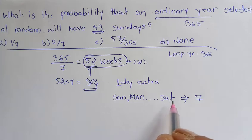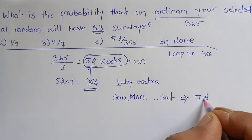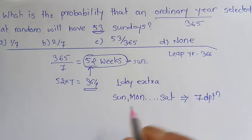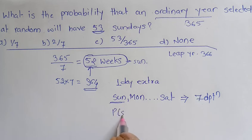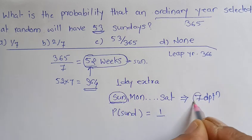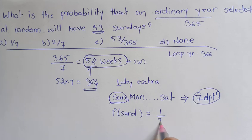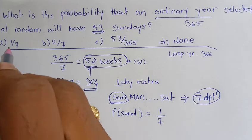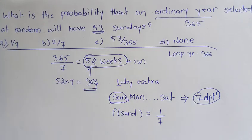So these are, there are total seven options I am having, so out of which I want only Sunday. So what is my probability? The probability of that extra day being a Sunday is what? There is only one option for it, so one. Total options are what? Seven options. So it is 1/7. So my answer is 1/7.